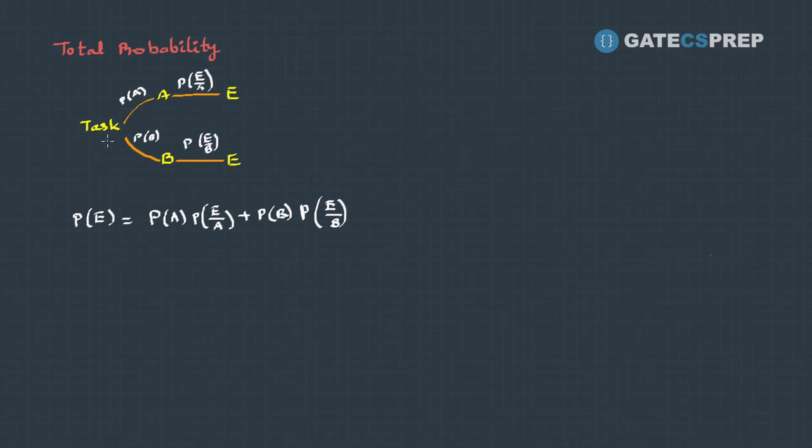In the previous lecture, we learned about total probability. That is, if a task is given and it can be done via two sub-events which lead to our main event, then the probability of the main event...